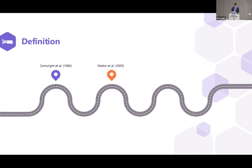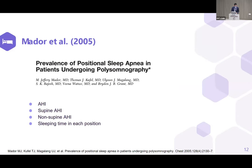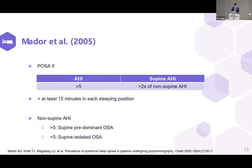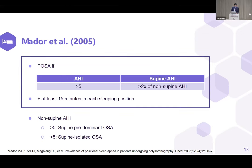In 2005, a group of authors also tried to classify positional OSA further. Other than the three parameters from the previous classification, they also added sleeping time — the patient must spend at least 15 minutes in each position. The patient is classified depending on the non-supine AHI: supine-predominant OSA if the non-supine AHI is more than five, and supine-isolated OSA if the non-supine AHI is less than five.